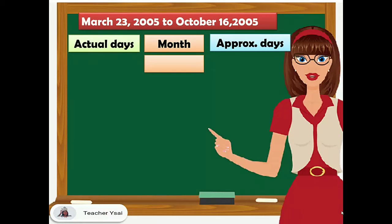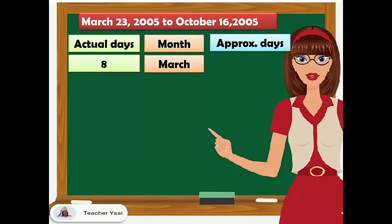We have to count the number of remaining days for the month of March. Since the starting date or the origin date is March 23, to solve for the actual days, we know that March has 31 days. So 31 minus 23, we have 8 days. And for the approximate days, we have to assume that all months of the year have 30 days. 30 minus 23, we have 7.